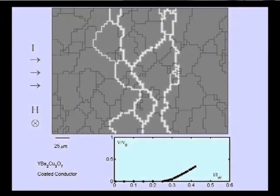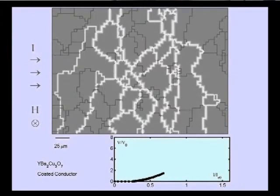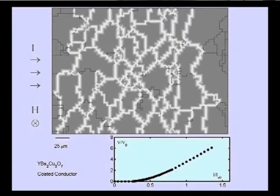At the critical current we have one flux channel penetrating, but then very shortly after we have multiple channels penetrating the superconductor at various grain boundaries.